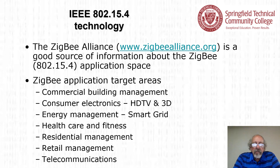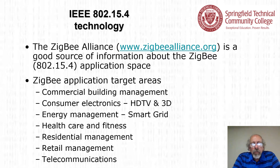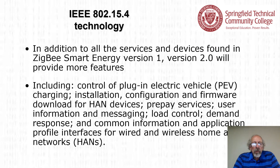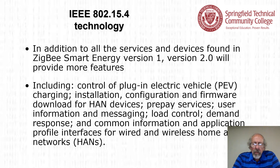Zigbee application target areas include commercial building management, consumer electronics such as high-definition TV and 3D, energy management and smart grid, healthcare and fitness, residential management, retail management, and telecommunications. The Zigbee Alliance has moved into the IoT arena. In addition to Zigbee Smart Energy version 1, version 2 will provide more features including control of plug-in electric vehicles and their charging, installation and configuration, firmware download for handheld devices, pre-pay services, user information and messaging, load control, demand response, and common application profile interfaces for wired and wireless home area networks.